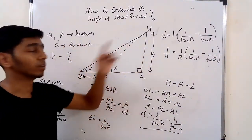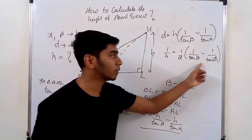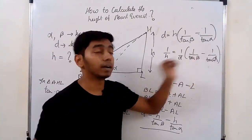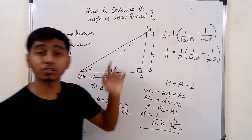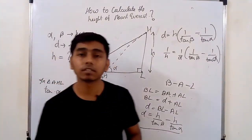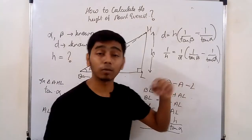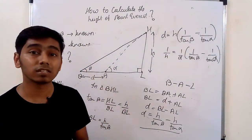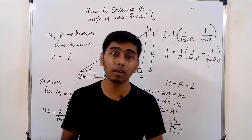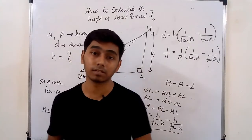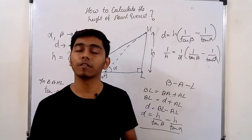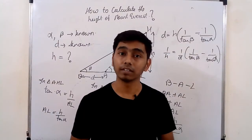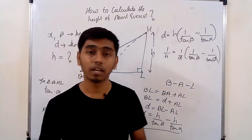So this is how you calculate the height of Mount Everest. You put in the values — the shifting distance D and angles alpha and beta, which are the angles of inclination. I hope you have understood how we calculate the height of Mount Everest. We saw two applications: how to calculate the height of a building and how to calculate the height of Mount Everest. Make sure you share it with your friends and let everyone know how we calculate Mount Everest. Thank you for watching.